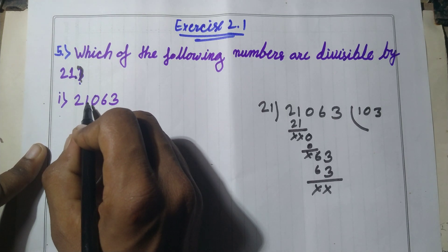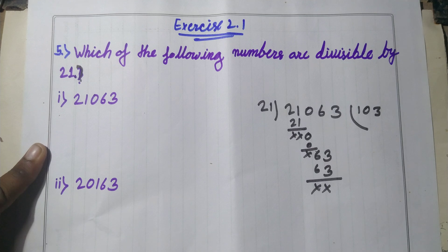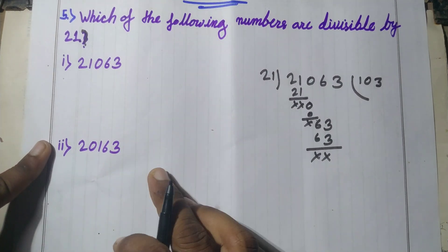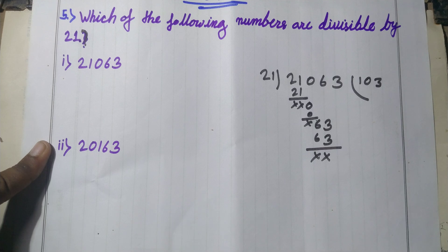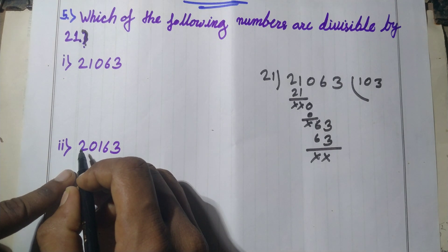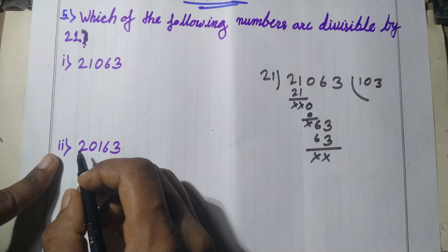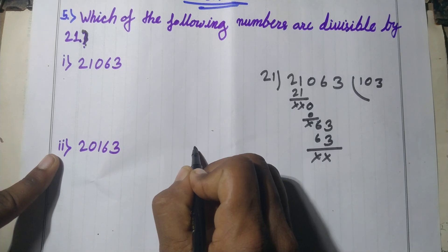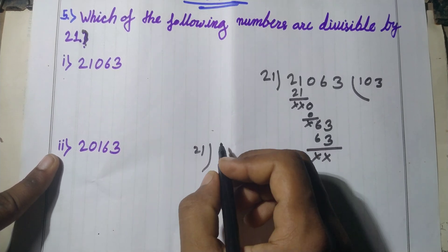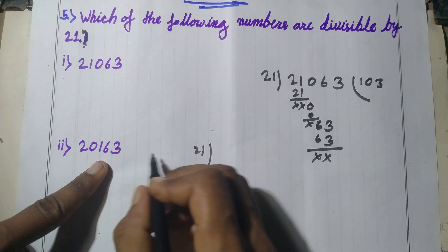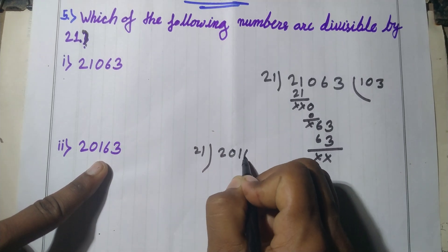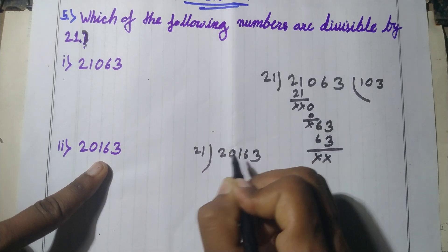Now let's check option 2: the number 20163. Dividing 20163 by 21.